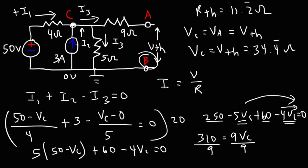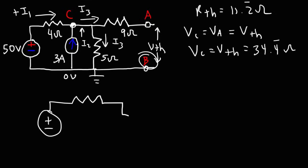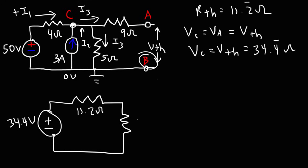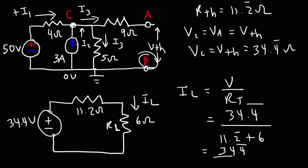So that's the Thevenin voltage. Now we can draw the simplified circuit: a Thevenin voltage of 34.4 V, a Thevenin resistance of 11.2 ohms, and a load resistance of 6 ohms. The current flowing through the load resistance is the voltage divided by the two series resistors: 34.4 / (11.2 + 6) = 34.4 / 17.2 repeating, which gives a current of 2 amps.